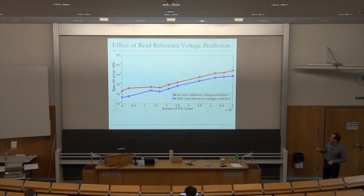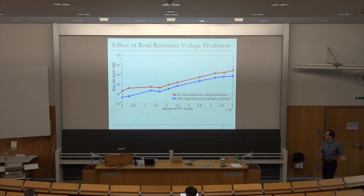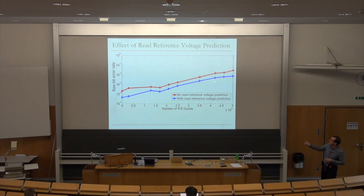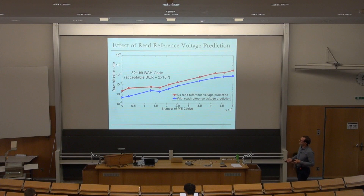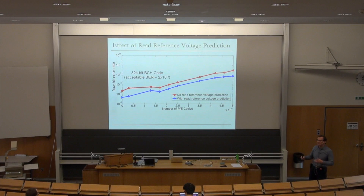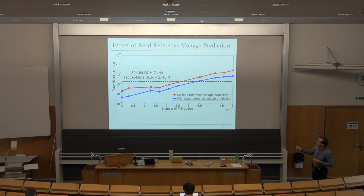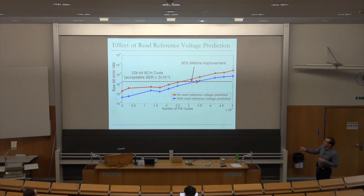If you don't do read reference voltage prediction, your raw bit error rate before error correction is pretty high. With read reference voltage prediction — as proposed in the paper and implemented in existing controllers — you reduce the raw bit error rate significantly, independent of how worn out your device is. With a 32-kilobit BCH code and an acceptable bit error rate of 2×10⁻³, read reference voltage prediction improves lifetime by about 30%.